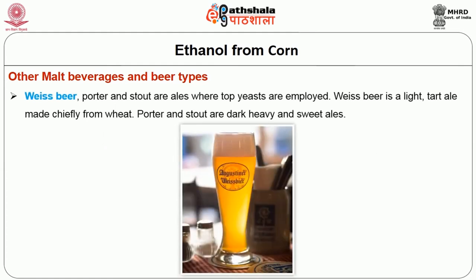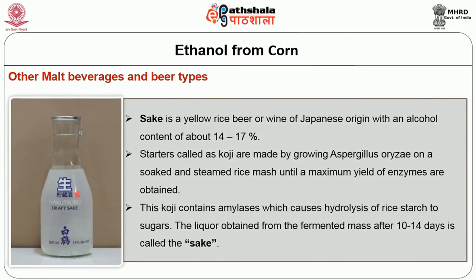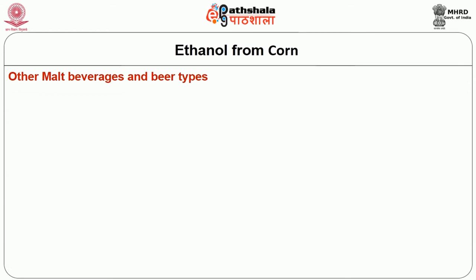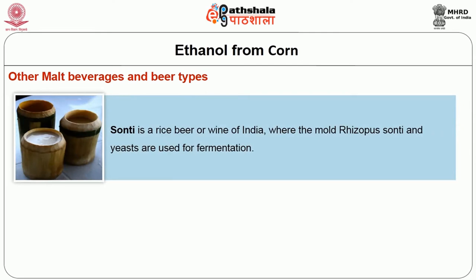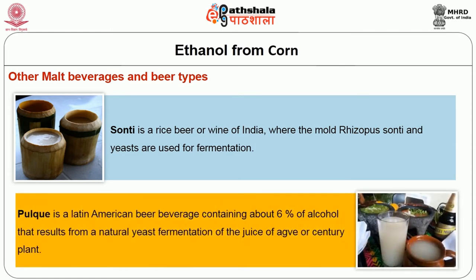Weiss beer, porter and stout are ales where top yeast is employed. Weiss beer is a light, tart ale made chiefly from wheat. Porter and stout are dark, heavy and sweet ales. Sake is a yellow rice beer or wine of Japanese origin with an alcohol content of about 14 to 17 percent. Starters called koji are made by growing Aspergillus on soaked and steamed rice mash until maximum yield of enzymes is obtained. This koji contains amylases which cause hydrolysis of rice starch to sugars, and the liquor obtained from the fermented mash after 10 to 14 days is called sake. Sonti is a rice beer or wine of India where mold Rhizopus sonti and yeast are used for fermentation. Pulque is a Latin American beverage containing about 6% alcohol, resulting from natural yeast fermentation of the juice of agave or century plant.